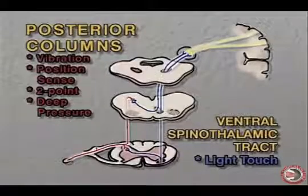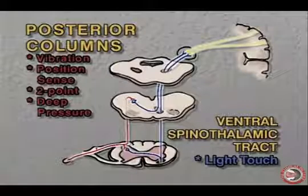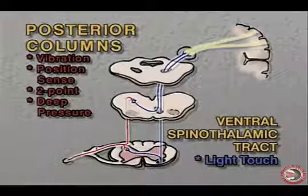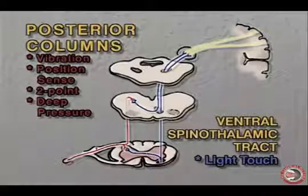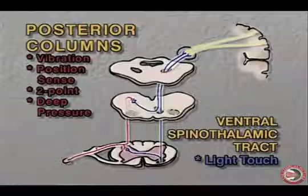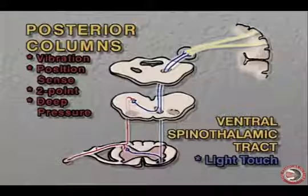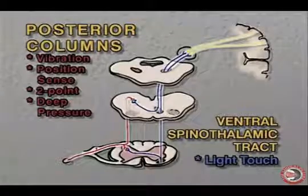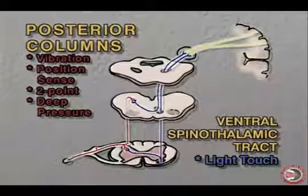The other ascending tract we want to evaluate is the posterior columns — the fasciculus gracilis and fasciculus cuneatus. The posterior columns transmit the sensations of vibration, deep pressure, position sense, two-point discrimination, and warm and cool.